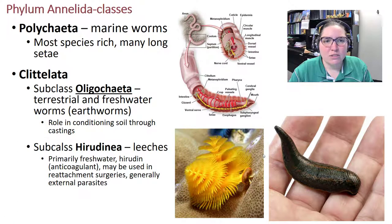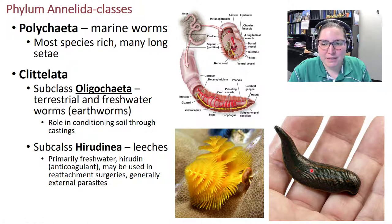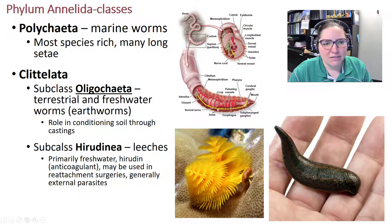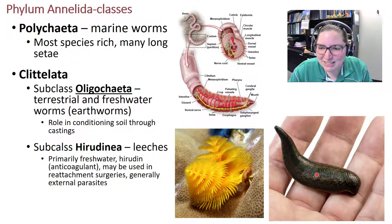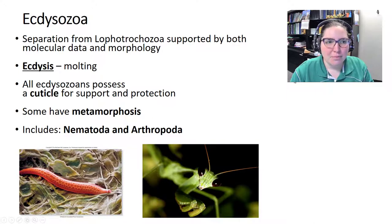The phylum Annelida — the segmented worms — are made up of repeating units. This includes polychaetes, which are marine worms with long setae extensions, as well as earthworms and leeches. Leeches are also segmented, though you might not stop to notice that if you encounter one.